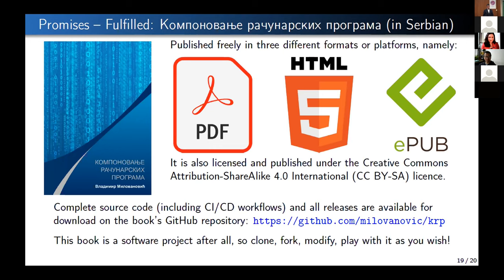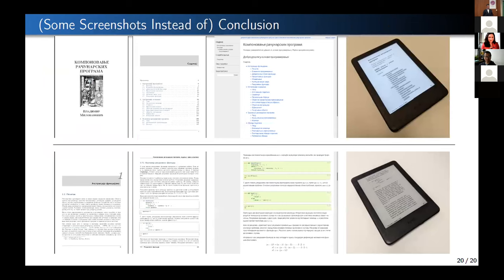What was envisioned is fulfilled. There's a book called Composing Computer Programs, available in PDF, HTML, and EPUB. Its complete source code, including CI/CD workflows for all releases, is available on GitHub — you can freely download the book and the software it's generated from. Since it is a software project, you can clone it, fork it, modify it, and send changes. Snapshots show the PDF is indistinguishable from a book made clean-slate in LaTeX, the HTML version is high quality, and it photographs well on a Kindle. The input source is really plain text, making this a viable option for rapid textbook development.